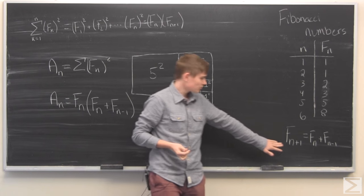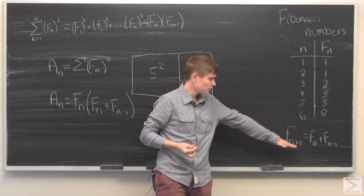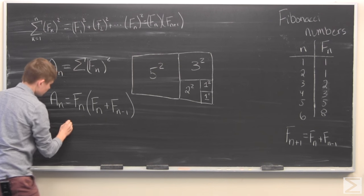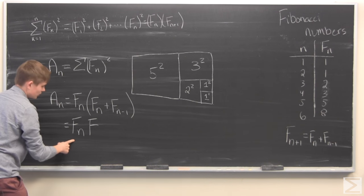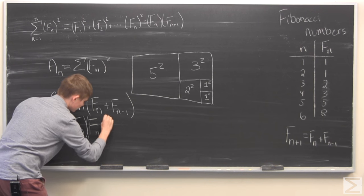Now, based on the defining property of the Fibonacci numbers, we have the next Fibonacci number is equal to the sum of the last two. We can simplify this part right here and write it as the product of the nth Fibonacci number and the n plus 1th Fibonacci number.